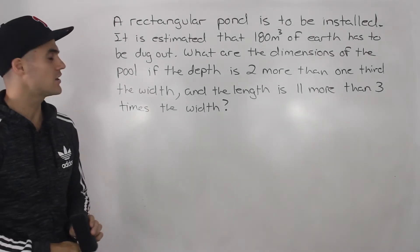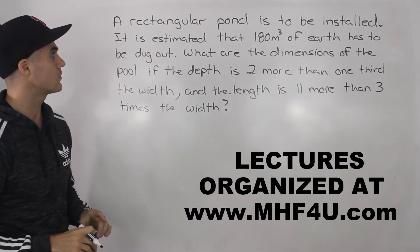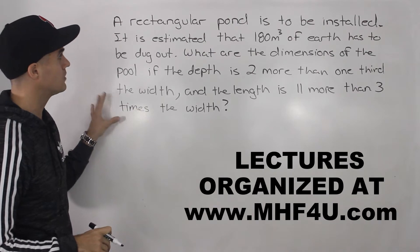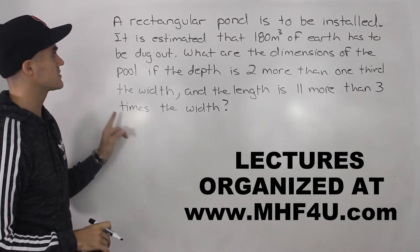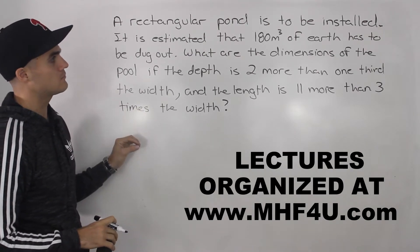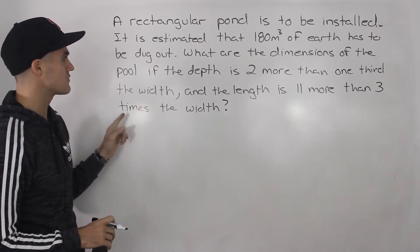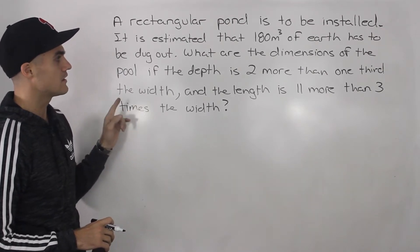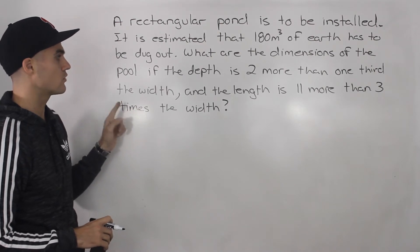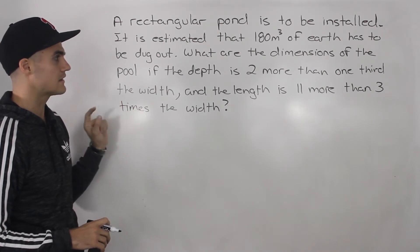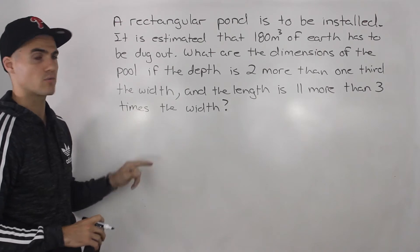What's up everybody, welcome back. Patrick here. Moving on to another question. So this is a word problem. A rectangular pond is to be installed. It is estimated that 180 meters cubed of earth has to be dug out. What are the dimensions of the pool if the depth is two more than one third the width and the length is 11 more than three times the width?